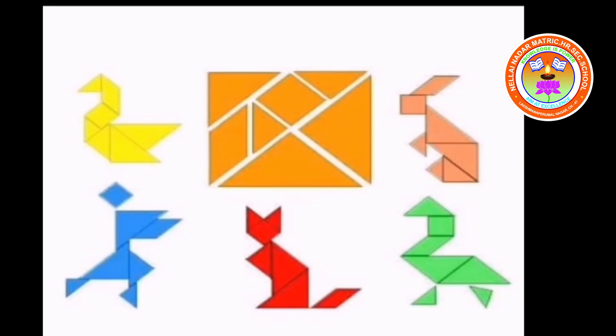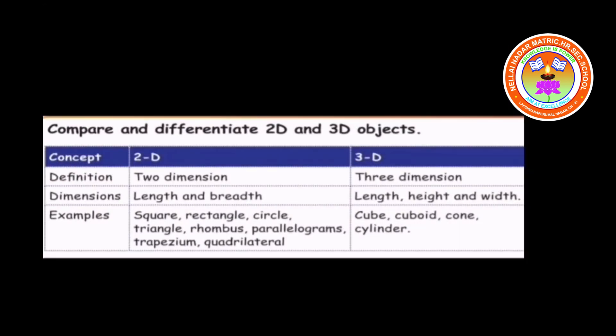So far we have seen 2D and 3D shapes. To conclude, I am going to compare and differentiate 2D and 3D objects. 2D objects are two-dimensional figures which have two dimensions: length and breadth. Some examples of 2D objects are square, rectangle, circle, triangle, rhombus, parallelogram, trapezium, and quadrilateral.